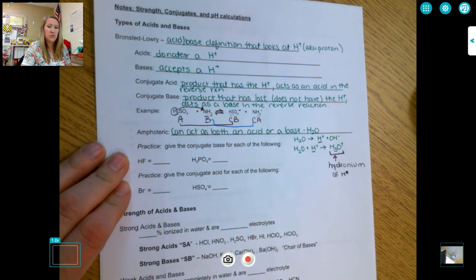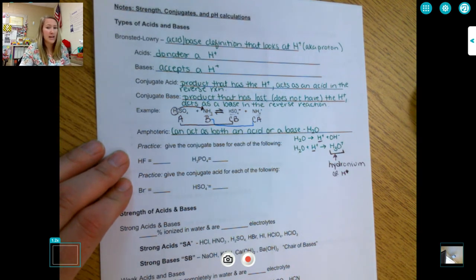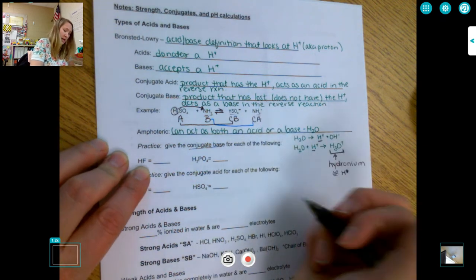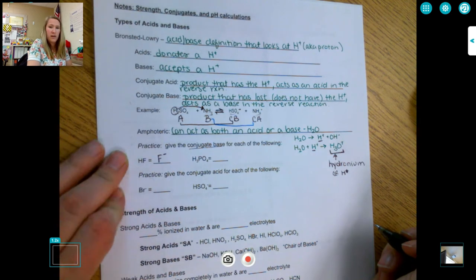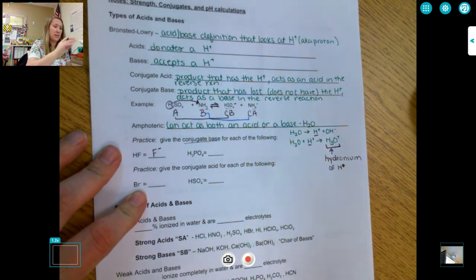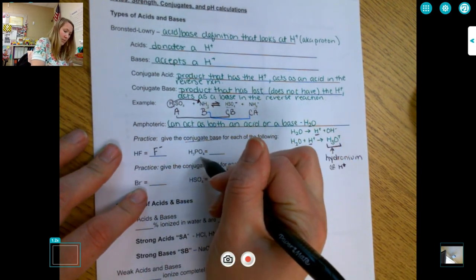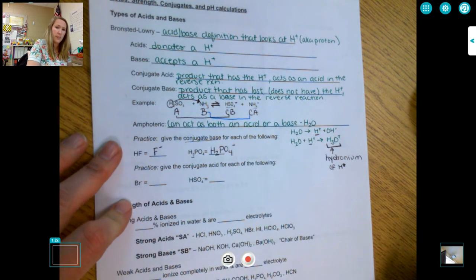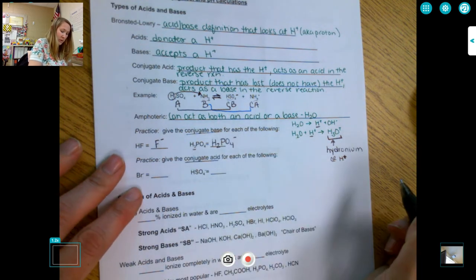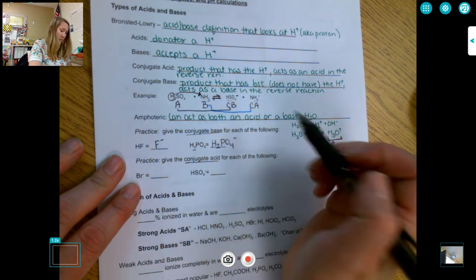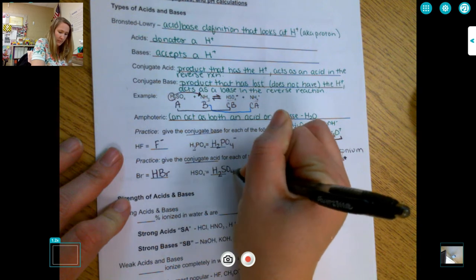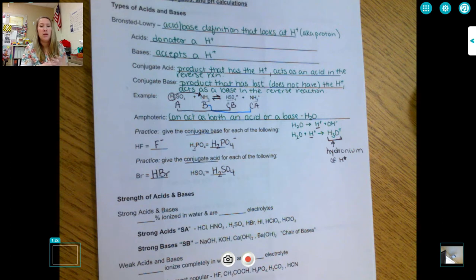So one thing that you can be asked to do is just given the formula, you can be asked to figure out the conjugate base or the conjugate acid. So HF, the conjugate base of an acid, we know has lost the hydrogen ion. So the conjugate base for hydrofluoric acid is just F minus, and we cannot forget about our charge. Remember, hydrogen has a plus one charge, so if I get rid of it, I'm losing one. Similarly, H3PO4, so phosphoric acid, I'm going to lose one of my hydrogens. So I'm going to have H2PO4 with a minus one charge. Going the opposite direction, given the conjugate acid for each of the following. So conjugate acid has gained an acidic hydrogen. So instead of Br minus, hydrogens always go first. So HBr. Instead of HSO4 minus, I'm going to have H2SO4.